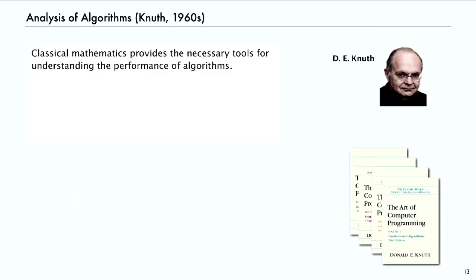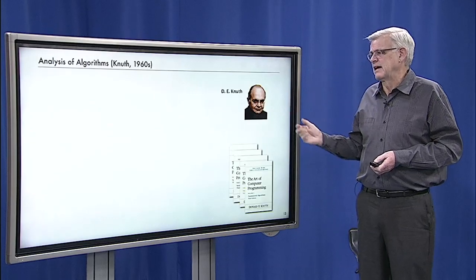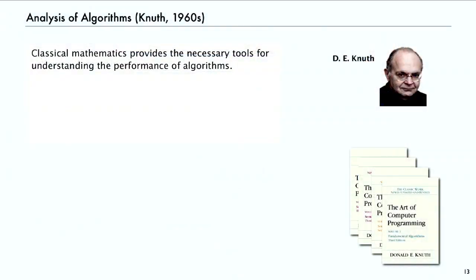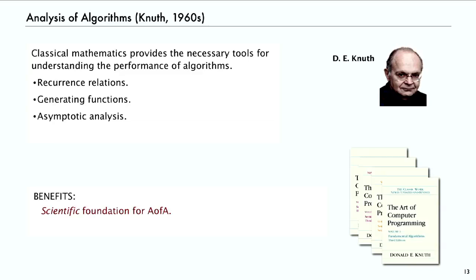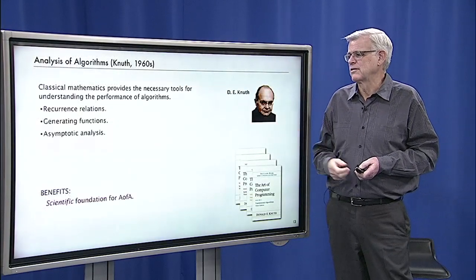But the field of analysis of algorithms was really initiated by Knuth in the 1960s. And what Knuth told the world was that classical mathematics has really got the necessary tools that we need for understanding the performance of algorithms. There's things like recurrence relations and generating functions and asymptotic analysis that has the benefit of giving a scientific foundation for the analysis of algorithms. And Knuth wrote a series of four books so far, and the first one came out in the late 60s and two more came out in the early 70s. That really set out this scientific foundation that we really can use classic mathematics to understand the performance of algorithms.